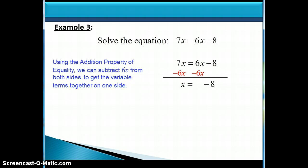And 7x minus 6x is x. And then the 6x's on the right cancel each other out since they add up to 0, leaving us with just the minus 8 or negative 8. So our solution to this equation is x is equal to negative 8. And so our solution set is negative 8 inside curly brackets.